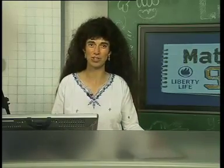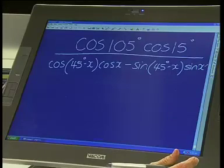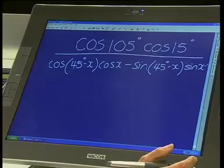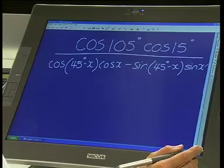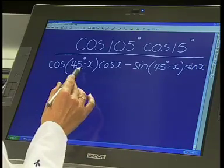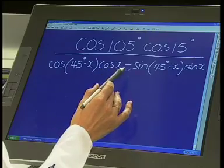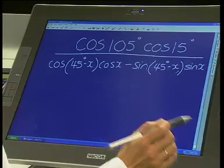My next topic is a trig expression. We're going to simplify the trig expression, which was found in an exam paper a few years back. The expression is to simplify cos of 105 times the cos of 15, and we're dividing it by the cos of 45 minus x times cos x minus the sine of 45 minus x times sine of x.